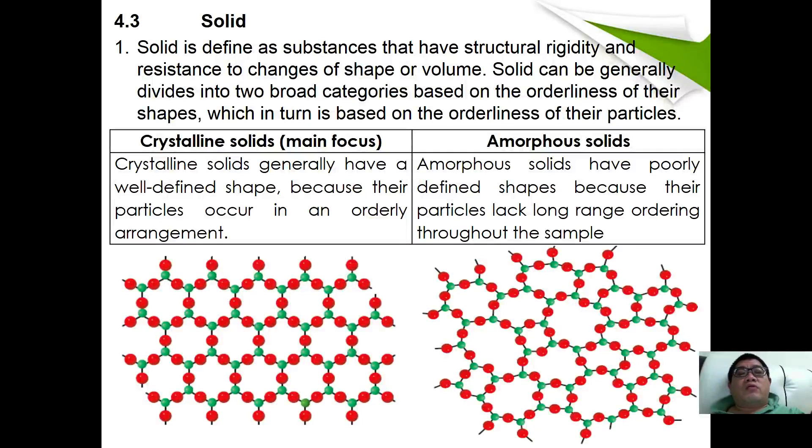Solid can be generally divided into two broad categories, namely crystalline solid and amorphous solid. As you can see from the diagram, what distinguishes crystalline solid and amorphous solid is that crystalline solids generally have a well-defined shape because their particles occur in an orderly arrangement. Whereas amorphous solids have poorly defined shapes because the particles lack long-range ordering throughout the sample.